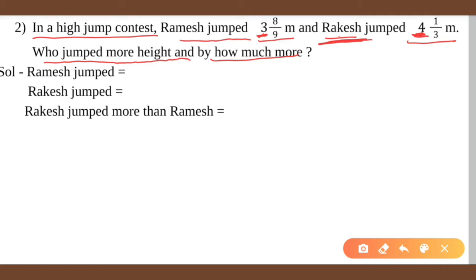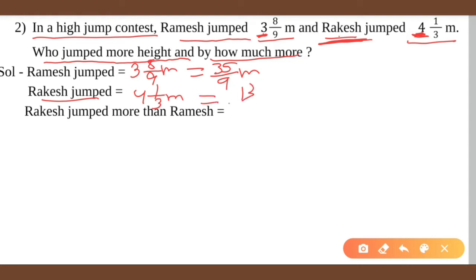Ramesh's jump is 3 and 8 by 9 meters, which equals 35 by 9 meters. Rakesh jumped 4 and 1 by 3 meters, which means 13 by 3 meters. Now we compare — Rakesh jumped more, so we do 13 by 3 minus 35 by 9.